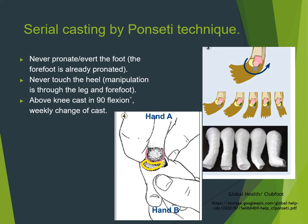In more detail on serial casting: the cast must be above the knee — not short leg — to prevent slippage and allow rotational control. The key concept of Ponseti is external rotation of the foot. You externally rotate the foot to about 70 degrees, using the lateral head of the talus as your center of rotation, as shown here with the physician's thumb positioned over the lateral head of the talus.